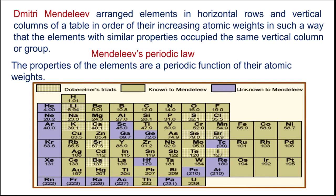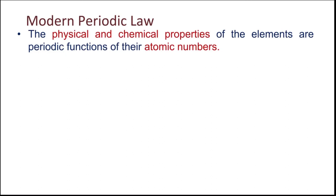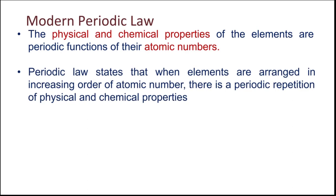According to modern periodic law, the physical and chemical properties of the elements are periodic functions of their atomic numbers. The main difference between the modern periodic table and Mendeleev's periodic table is that Mendeleev's table is arranged in increasing order of atomic masses, whereas the modern periodic table is arranged in accordance with the increasing order of atomic numbers. The periodic law states that when elements are arranged in increasing order of atomic number, there is a periodic repetition of physical and chemical properties.